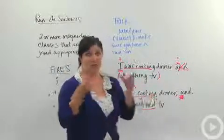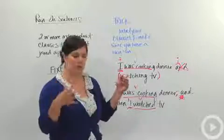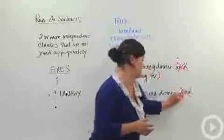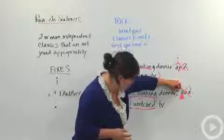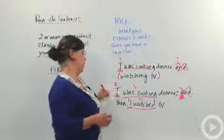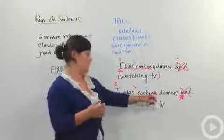And the last option, if you want to show some distinction, you want to maybe make it less wordy, get rid of your conjunction altogether, we can turn this comma into a semicolon. I was cooking dinner, then I watched TV.